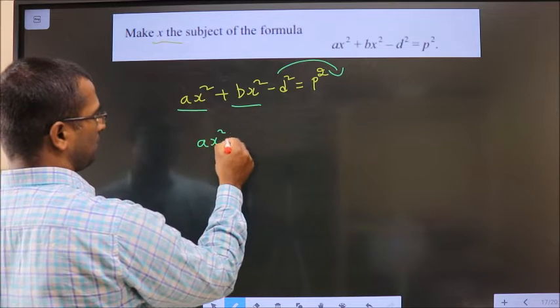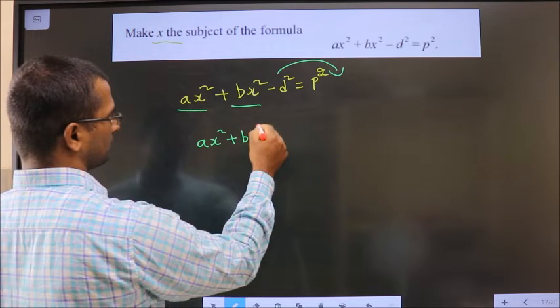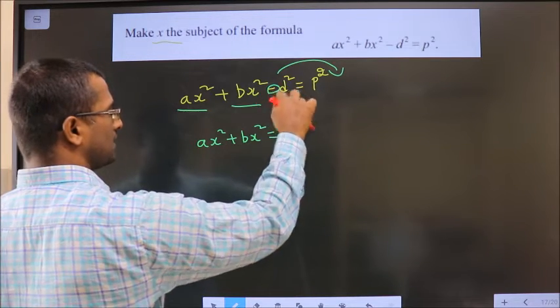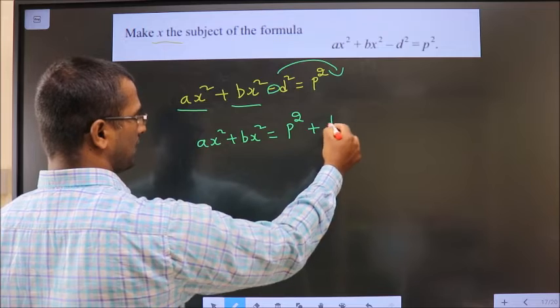So ax square plus bx square equals p square as it is. Here minus d square, it will become plus d square.